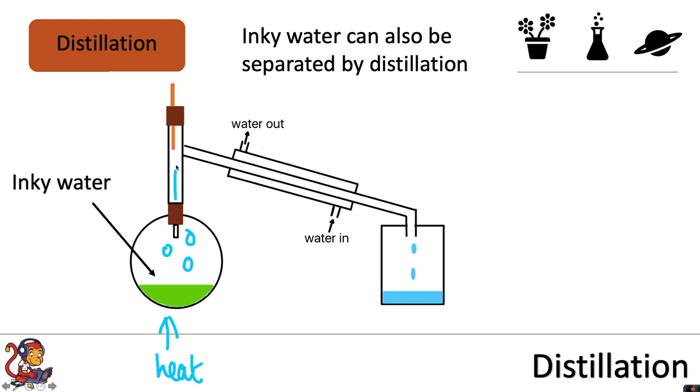turn into a gas and go down the sidearm where it would be cooled into liquid water where we would contain it over here. And any of the ink particles would be left here in the round bottom flask just like in the previous example we would have had the salt from sea water left here.